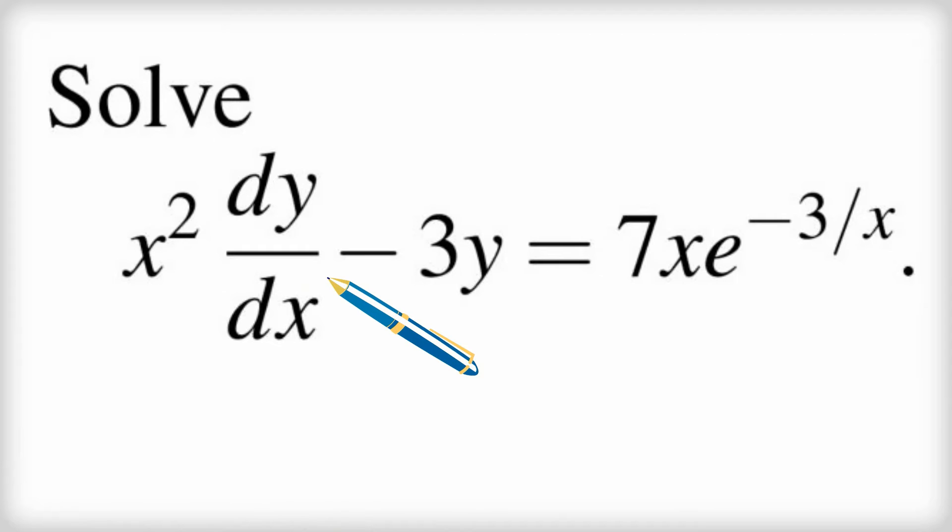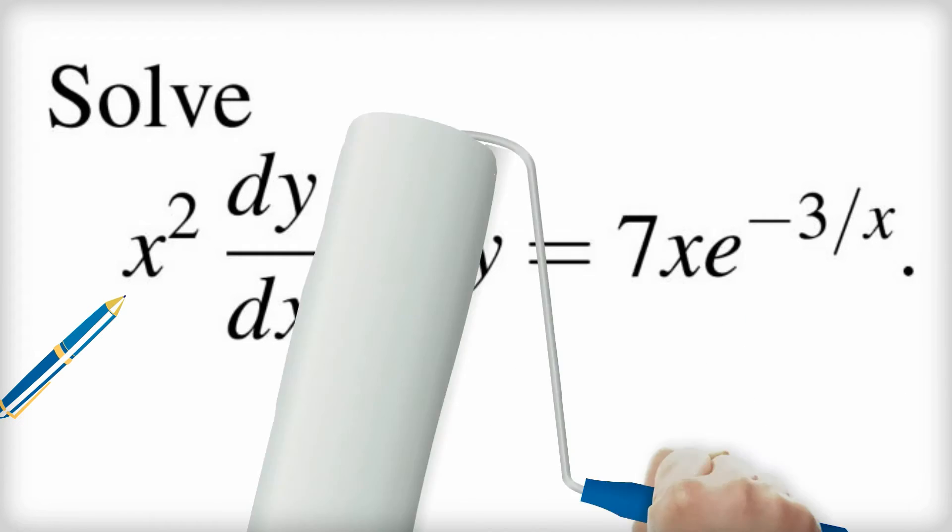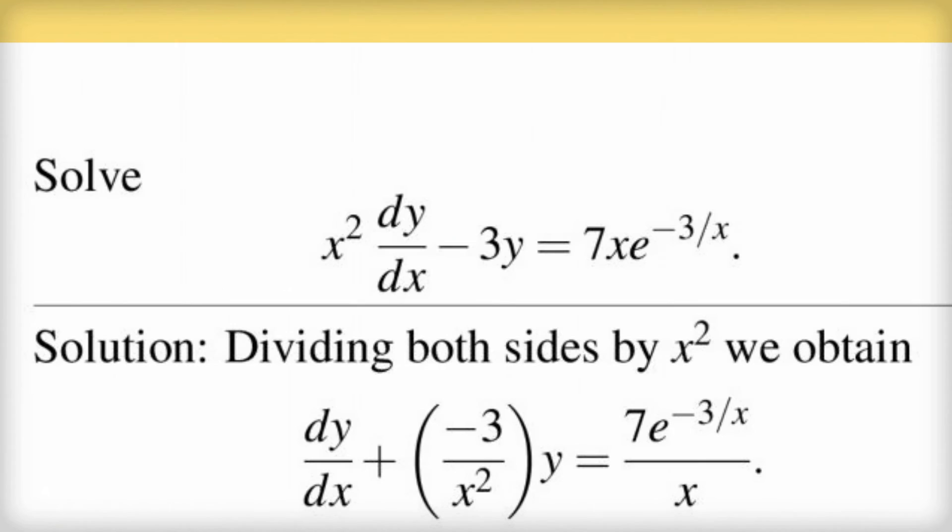We need to have dy/dx. We can't have higher derivatives, so no d squared y dx squared or anything like that. We need to have dy/dx and it has to have nothing in front of it. So in this case I've got x squared in front of it, I need to change that. So what I'll do is I'll divide both sides by x squared and that will sort out the first order requirement. So now I've got my expression here.